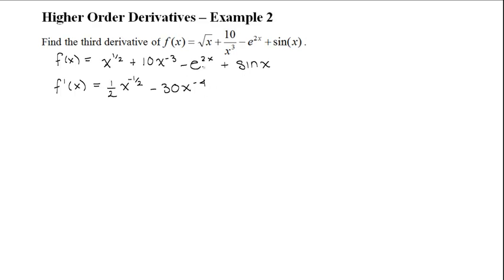For the next term, when we take the derivative of e to the 2x, we have to use chain rule — multiply the derivative of the whole function by the derivative of the inner function. The inner function here is 2x, so the sign stays the same: minus e to the 2x, multiplied by the derivative of 2x, which is just 2. For the last term, the derivative of sin x is just cos x, so we put this as plus cos x.